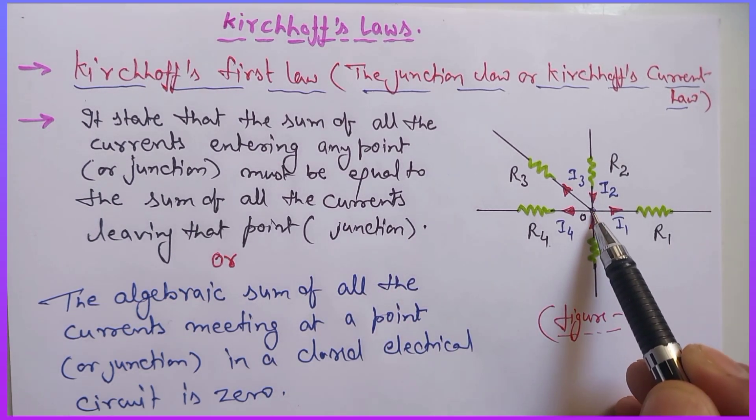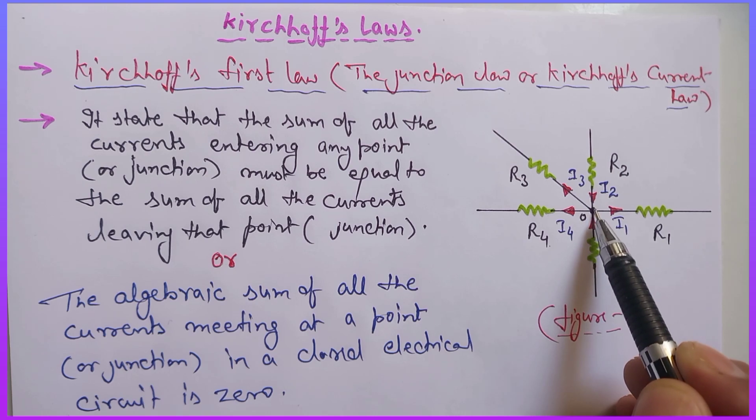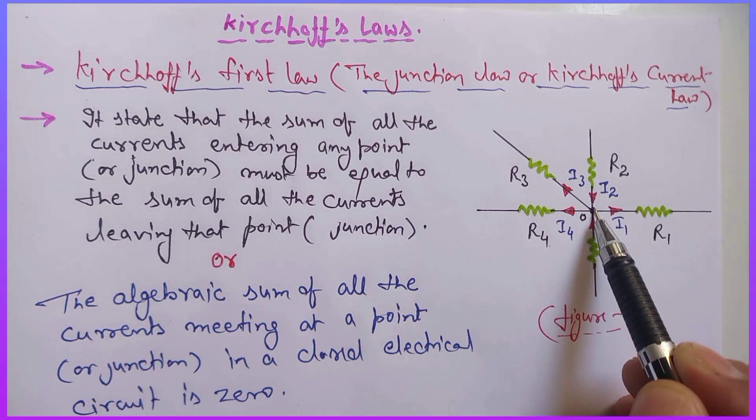According to this law, we have a junction. A junction is a meeting point where different paths meet.